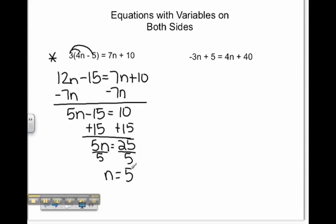Let's check our work in the original problem. 3 times the quantity of 4 times 5, which is 20, take away 5, needs to be equal to 7 times 5 plus 10.